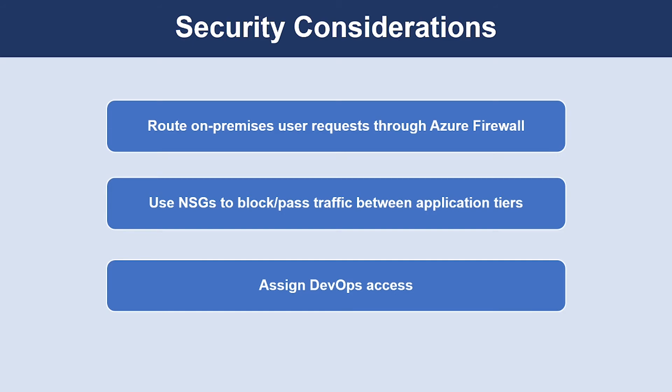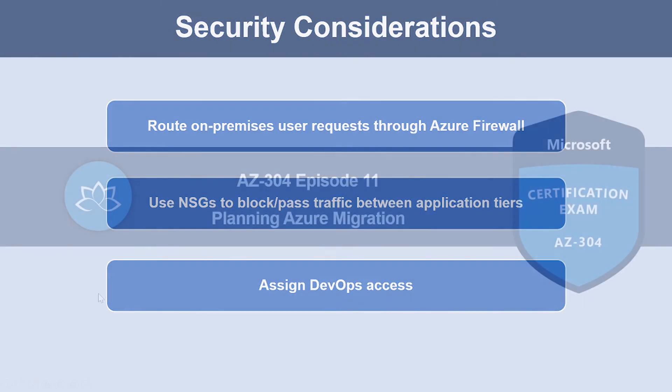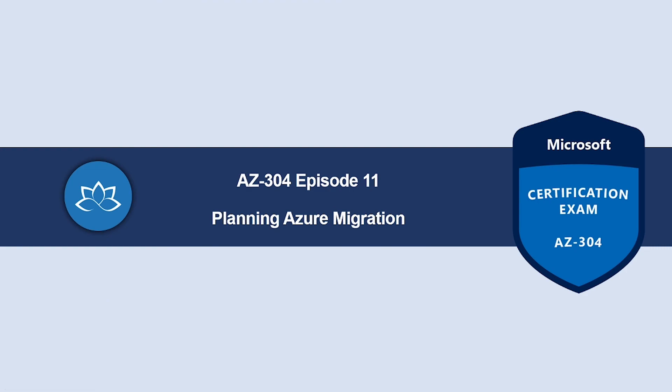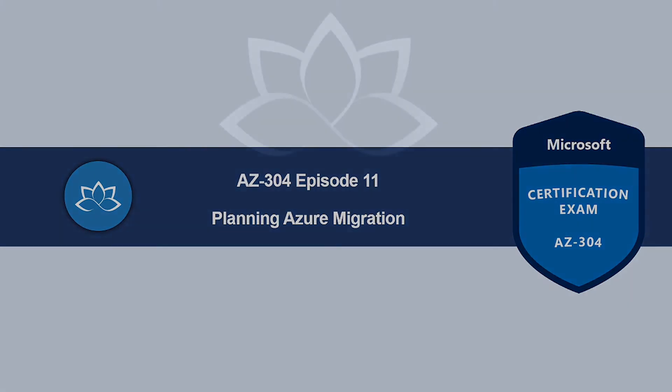When granting permissions, use the principle of least privilege, and log all administrative operations and perform regular audits to ensure any configuration changes were planned. That concludes this episode. In the next lesson, we're going to learn about how to plan Azure migration. I will see you in the next one. Until then, take care.